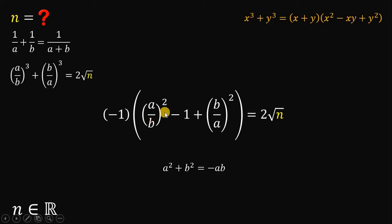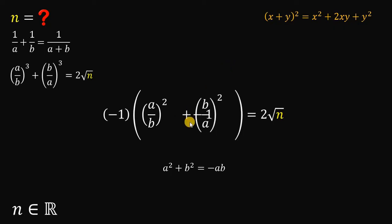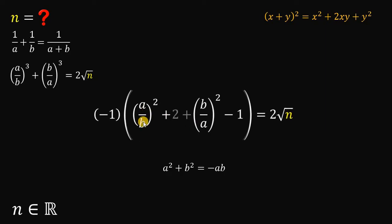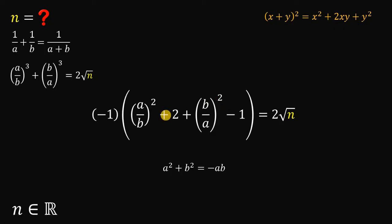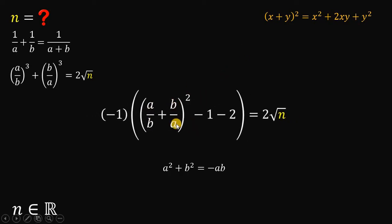Now focus on (a over b) squared plus (b over a) squared. This reminds me of the expansion of (x plus y) quantity squared, which equals x squared plus 2xy plus y squared. With x equals a over b and y equals b over a, the product xy equals 1. So if we add 2 between the squared terms, we get (a over b plus b over a) quantity squared. But when we add 2, we need to subtract 2 to keep it balanced.